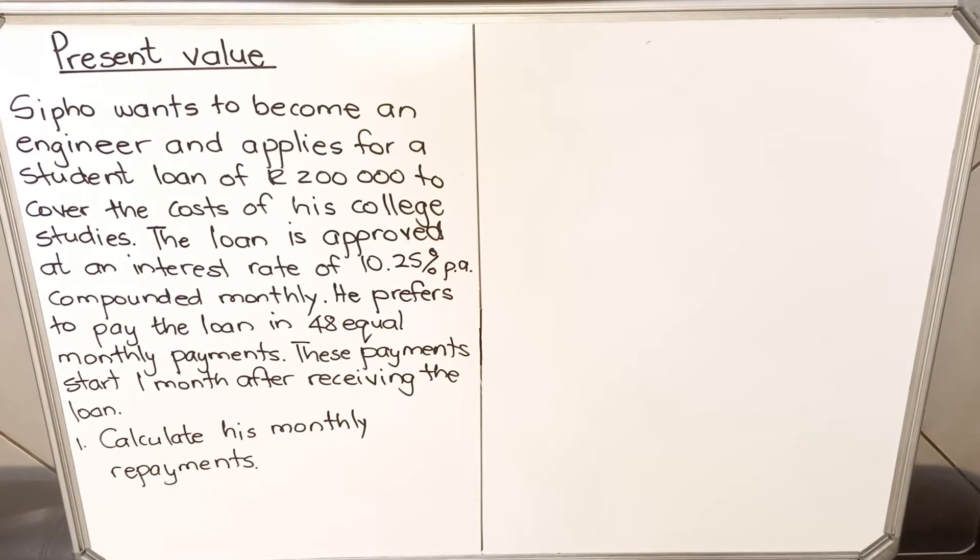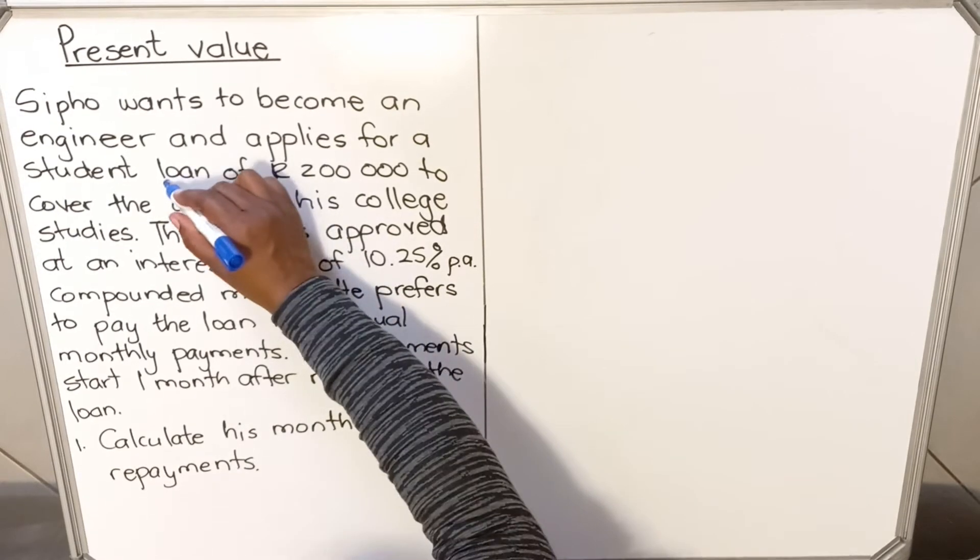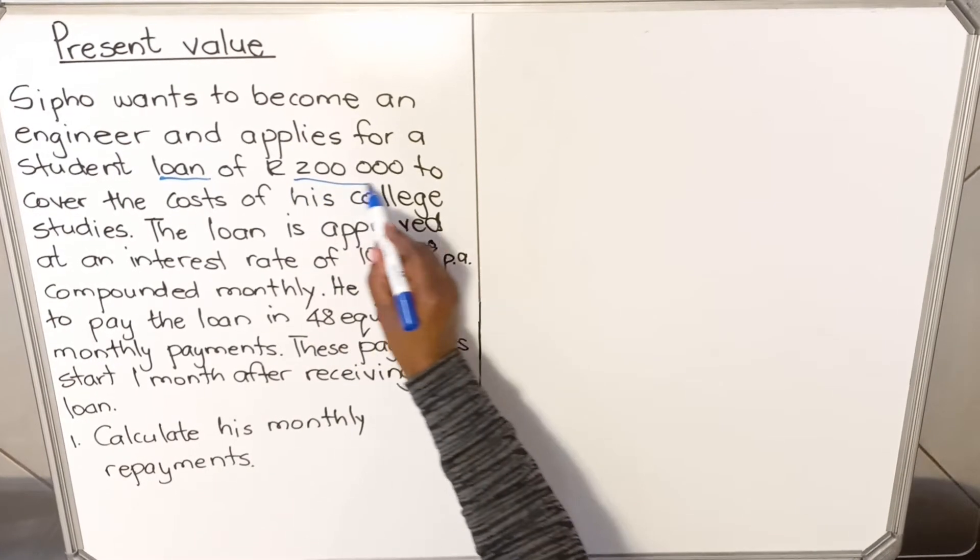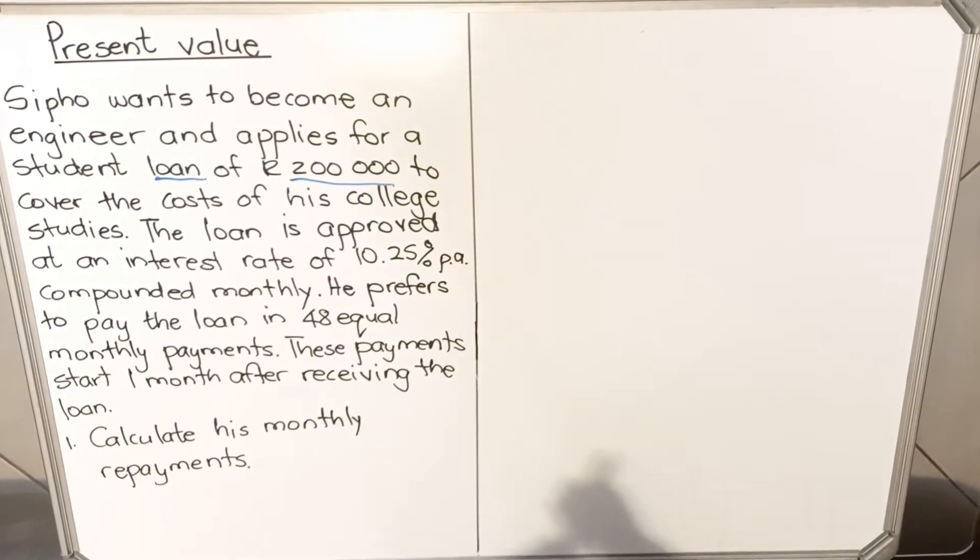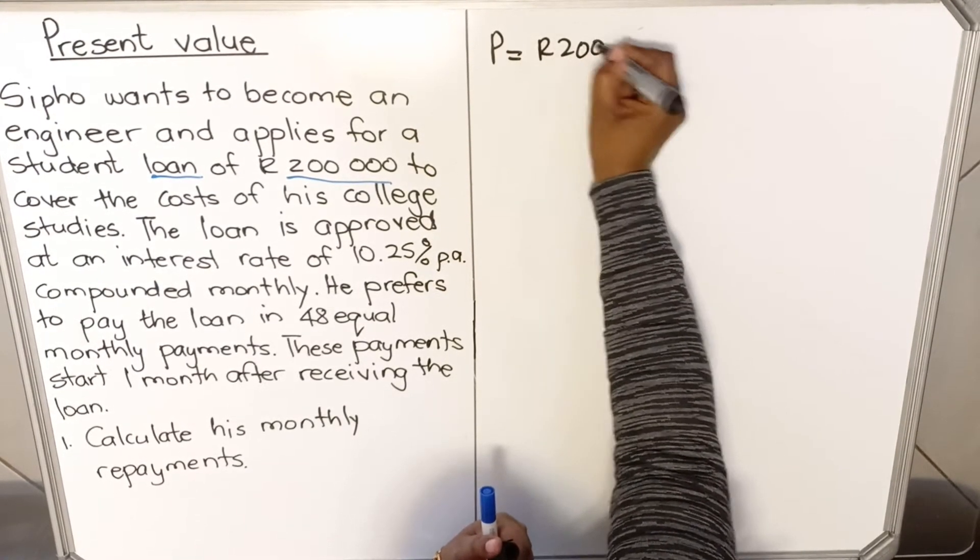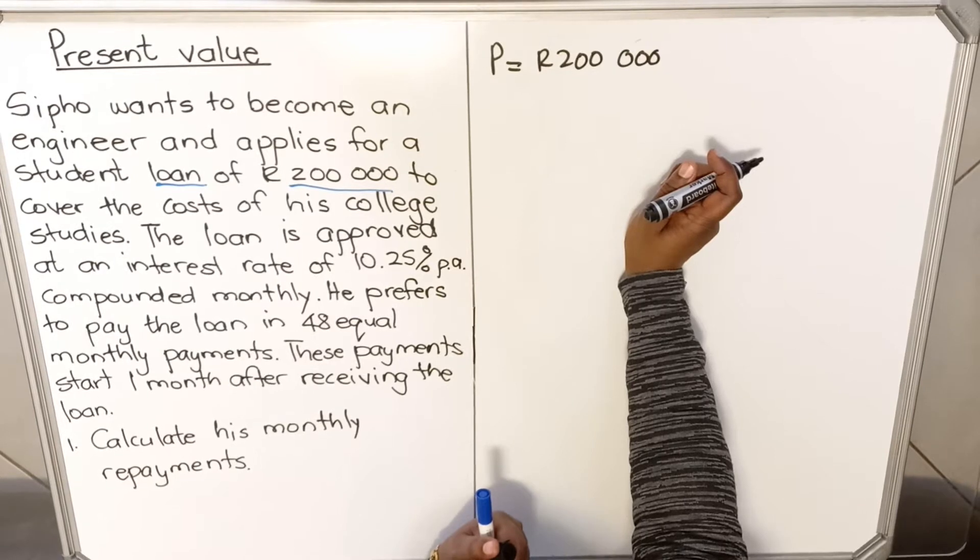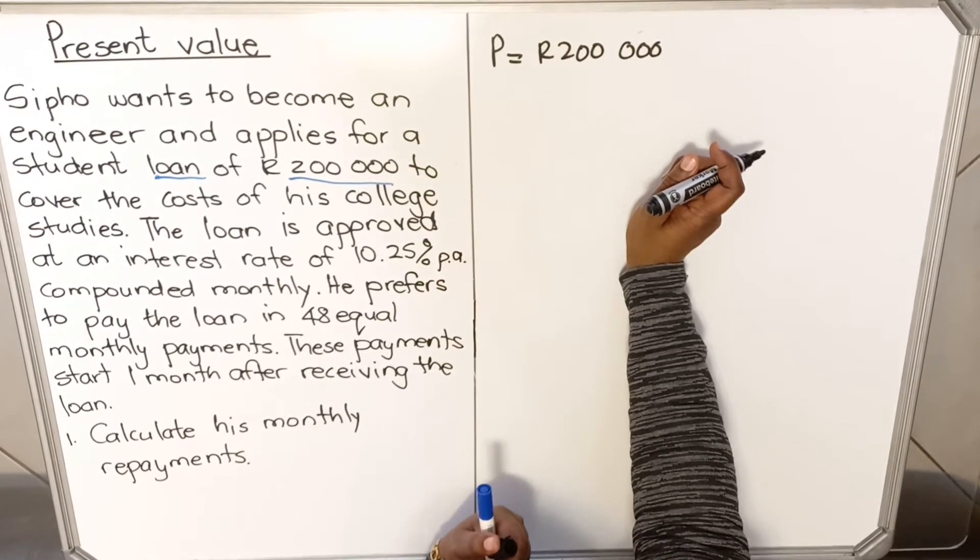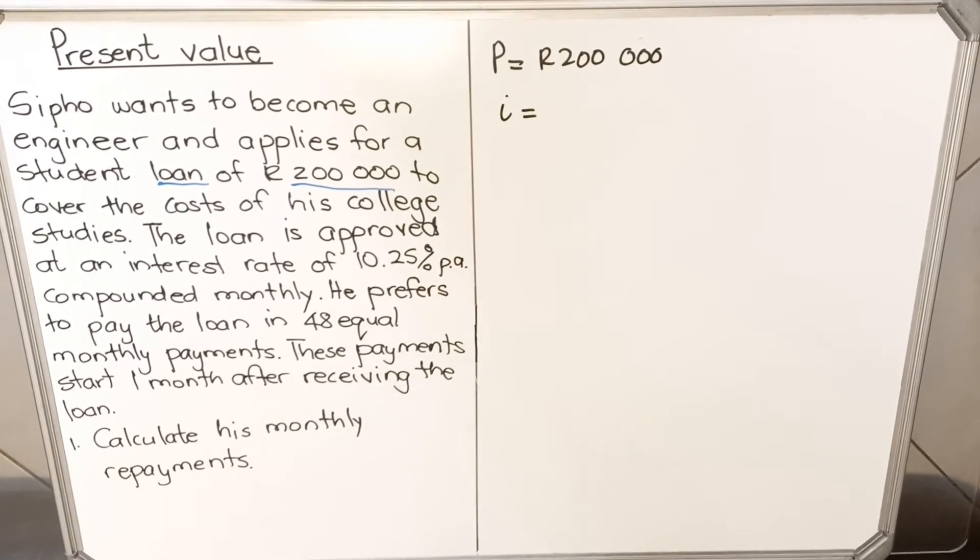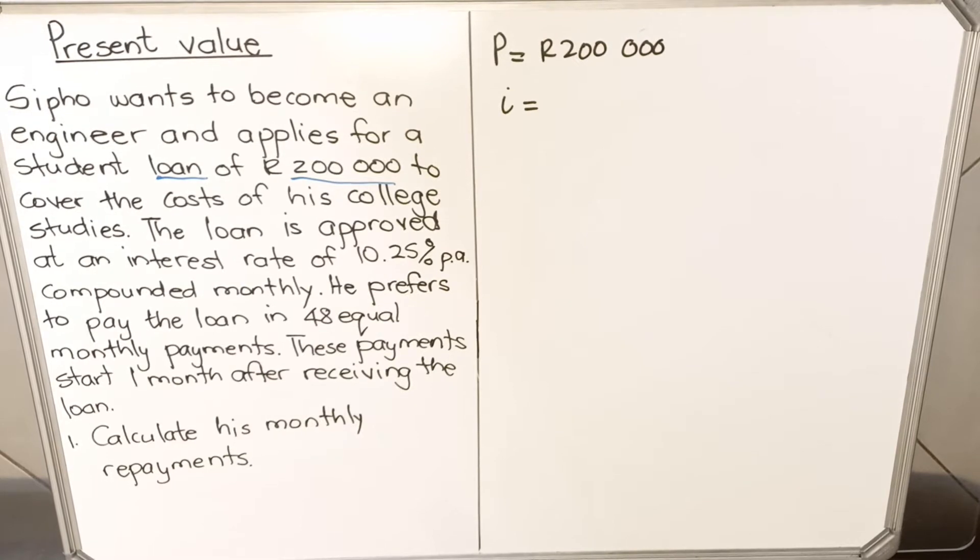We're going to read it again and write what we are given. Sipo wants to become an engineer and applies for a loan. If they say loan, you know it's going to be a present value of R200,000. This is the amount you write, that's your P, that's the amount that he wants. R200,000 to cover the cost of his college studies. The loan is approved at an interest rate of 10.25%. Interest rate is 10.25, you take your calculator, 10.25% means divide by 100.